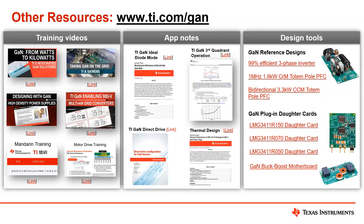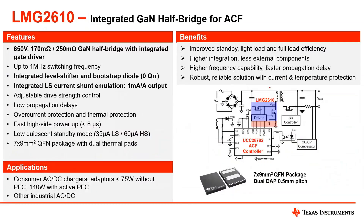Question: Why don't we have two different RDS-ONs for the high side and low side FETs? The high side device typically doesn't conduct as much current as the low side. That way we're able to use a slightly higher RDS-ON and essentially create a more cost-effective solution in the ACF design. You could theoretically use a symmetrical half bridge, but it's not necessarily as efficient from a cost perspective.